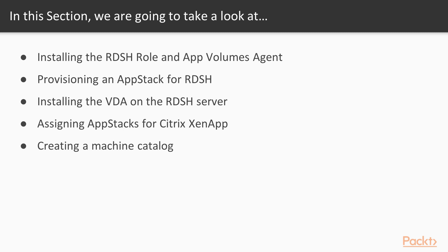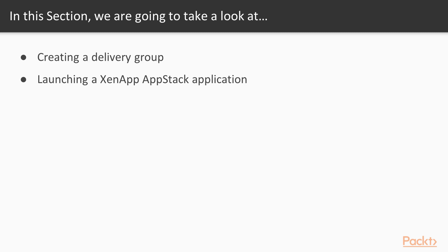So what are we going to cover in this section? We are going to focus on the steps required to build and configure App Volumes to work in a Citrix XenApp environment. We are going to start by configuring an RDSH server that we will use as the provisioning machine to create and capture App Stacks from. As part of this we will also install the App Volumes agent. Next we are going to take a production-like RDSH server from our example lab environment and install the Citrix VDA onto it before then assigning the newly provisioned App Stacks to the same server. The next part of the configuration is the Citrix-based components where we will create a machine group and then a delivery group for our AppStack-based applications.